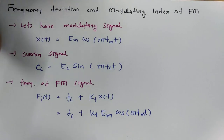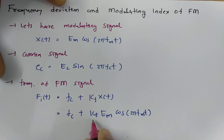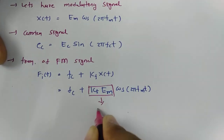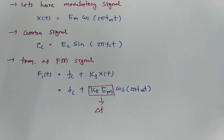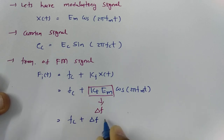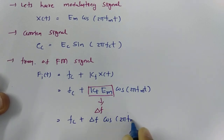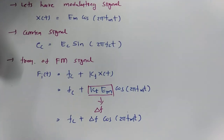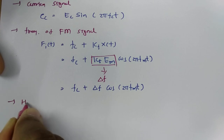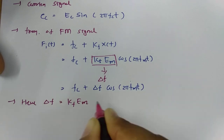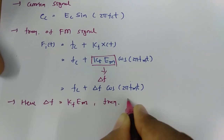Here, if you see the deviation of frequency, it is deviating with respect to this term. This is the maximum frequency deviation, delta f. So the frequency of the FM signal can be written as Fc plus delta f·cos(2π fm t), where delta f is the frequency deviation.